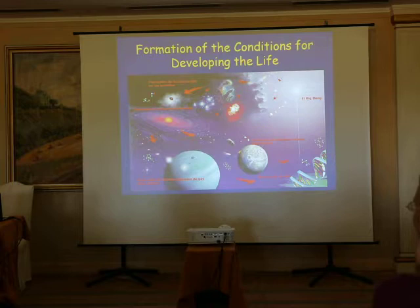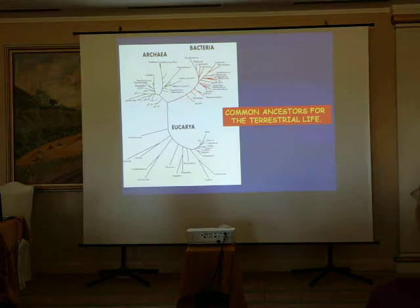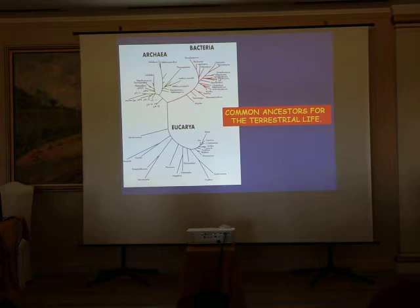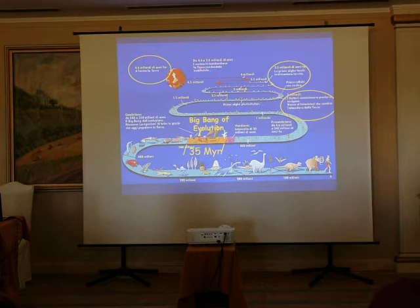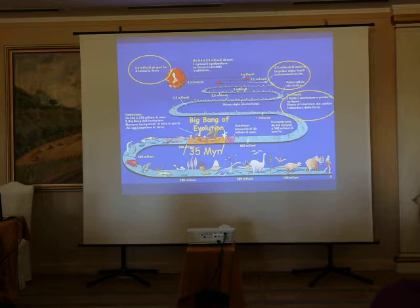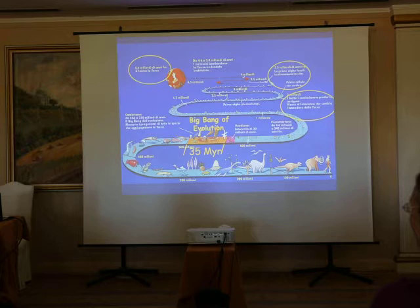Formation of the conditions for developing life: the common ancestor, as already discussed, is shared by all terrestrial life — all living beings on Earth come from the same origin. We had the formation of our planet around 4.5 billion years ago, and after slow evolution, we arrived at a point 535 million years ago, when in only 35 million years we had a big bang of evolution.